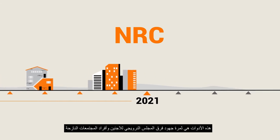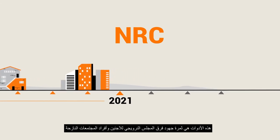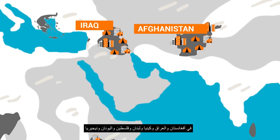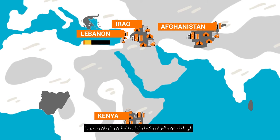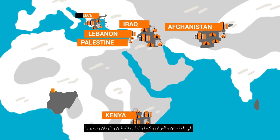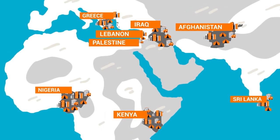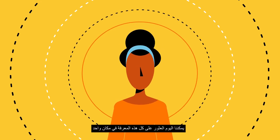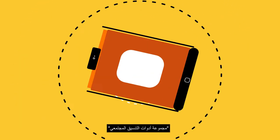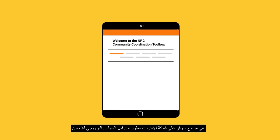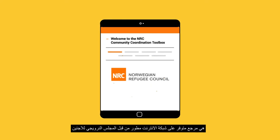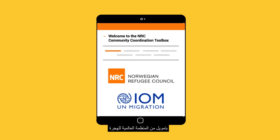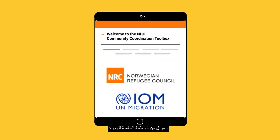It is the result of efforts of NRC teams and the displaced community members in Afghanistan, Iraq, Kenya, Lebanon, Palestine, Greece and Nigeria. Today, all this know-how can be found in one place — the Community Coordination Toolbox, a web-based resource developed by the Norwegian Refugee Council, NRC, with the funding from the International Organisation for Migration.